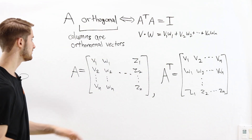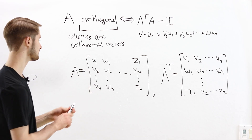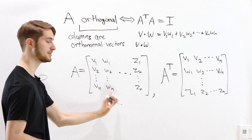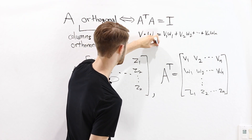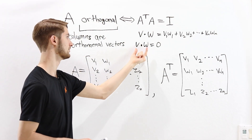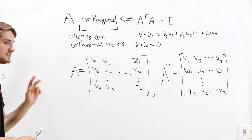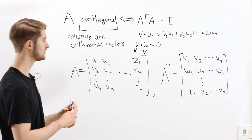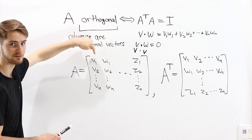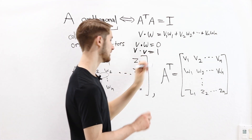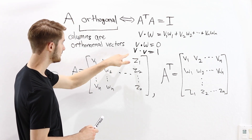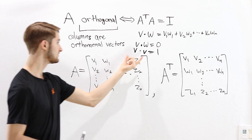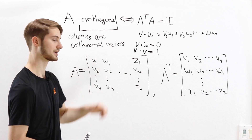There are two conditions for vectors to be orthonormal. First, if we take the dot product of two different vectors — for example, v dot w — the result should be zero, meaning the vectors are orthogonal. Second, if we take the dot product of a vector with itself, v dot v, this should equal one. Since v dot v equals the magnitude of v squared, this means the magnitude of each vector must be one.